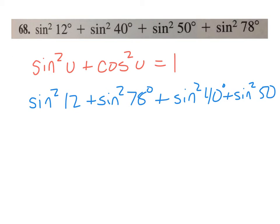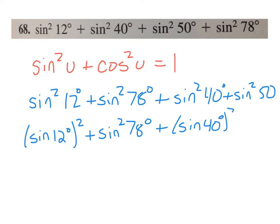What you want to do is keep in mind that sine squared of 12 degrees is the same as sine of 12 degrees squared. And then I'm not going to change this one at all. I'm going to leave this one alone. And then I'll change this one back to sine of 40 degrees squared.